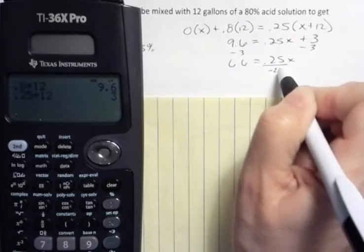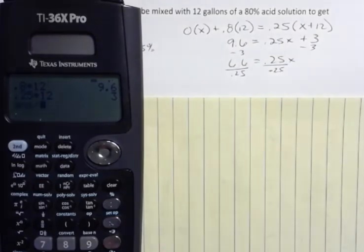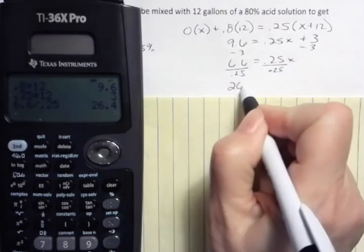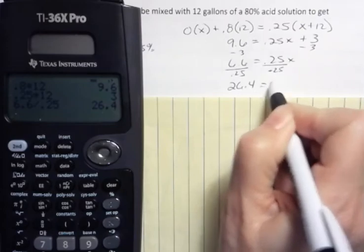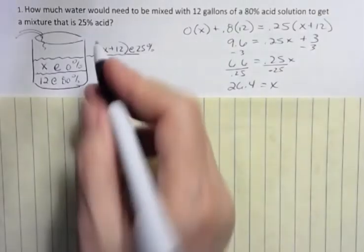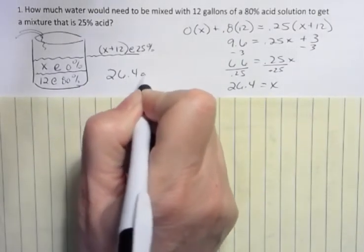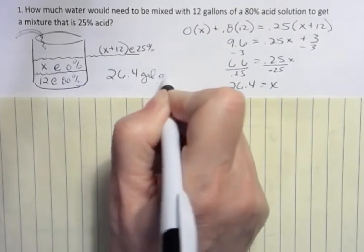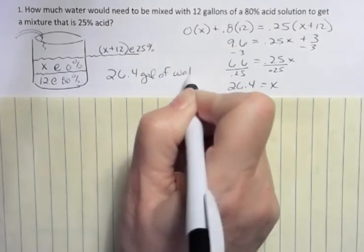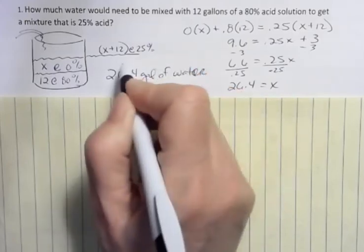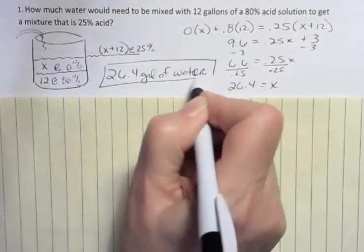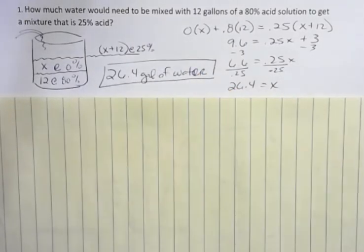Then I'm going to divide both sides by 0.25. And if I divide by 0.25, 6.6 divided by 0.25 is 26.4 equals X. Then what does that mean? That means I need 26.4 gallons of water to dilute that acidic solution from 80% down to 25%.